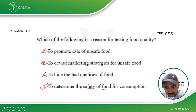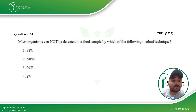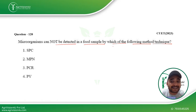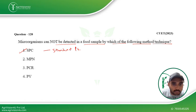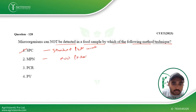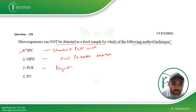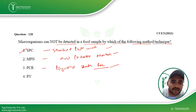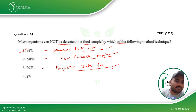Next: microorganisms cannot be detected in a food sample by which technique? This question is from food microbiology. SPC is the Standard Plate Count method, MPN is the Most Probable Number method, and PCR is the Polymerase Chain Reaction. Standard plate count can be used for solid or liquid foods, MPN is usually used for water, and PCR can be used for any food material. However, PV is not used to detect microorganisms, so PV is the answer for this question.